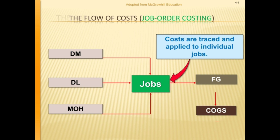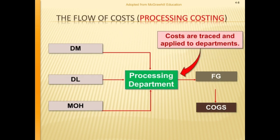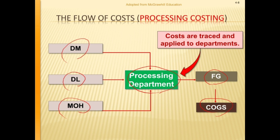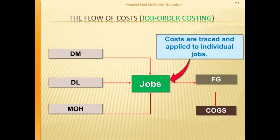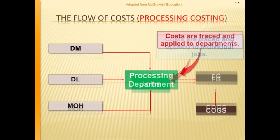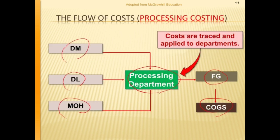In process costing, the three costs are the same: direct material, direct labor, and manufacturing overhead. The difference now is that instead of accumulating by job, we accumulate by processing department. When finished, the costs still move to finished goods and then to cost of goods sold when sold. Basically the same flow — the key difference is jobs in job order costing versus processing departments in process costing.